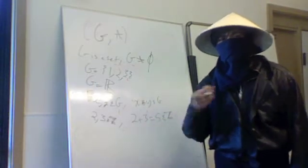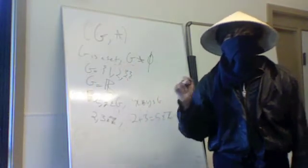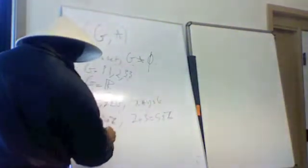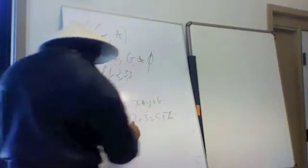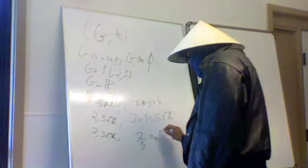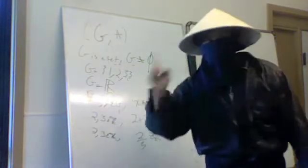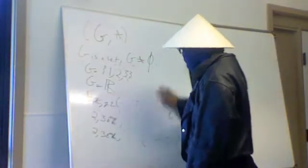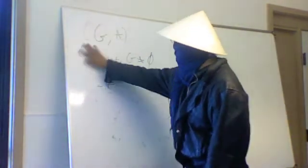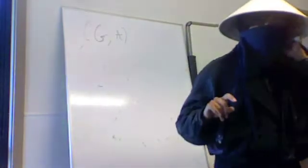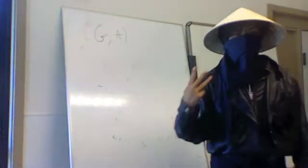An example of something that is NOT a binary operator: division in the integers. 2 and 3 are in G, but 2 divided by 3 is not an integer. So this fails to be a binary operator — it takes two things in G but does not spit out another thing in G. Multiplication in the reals or integers is a valid binary operator. So a group has to fulfill three properties.